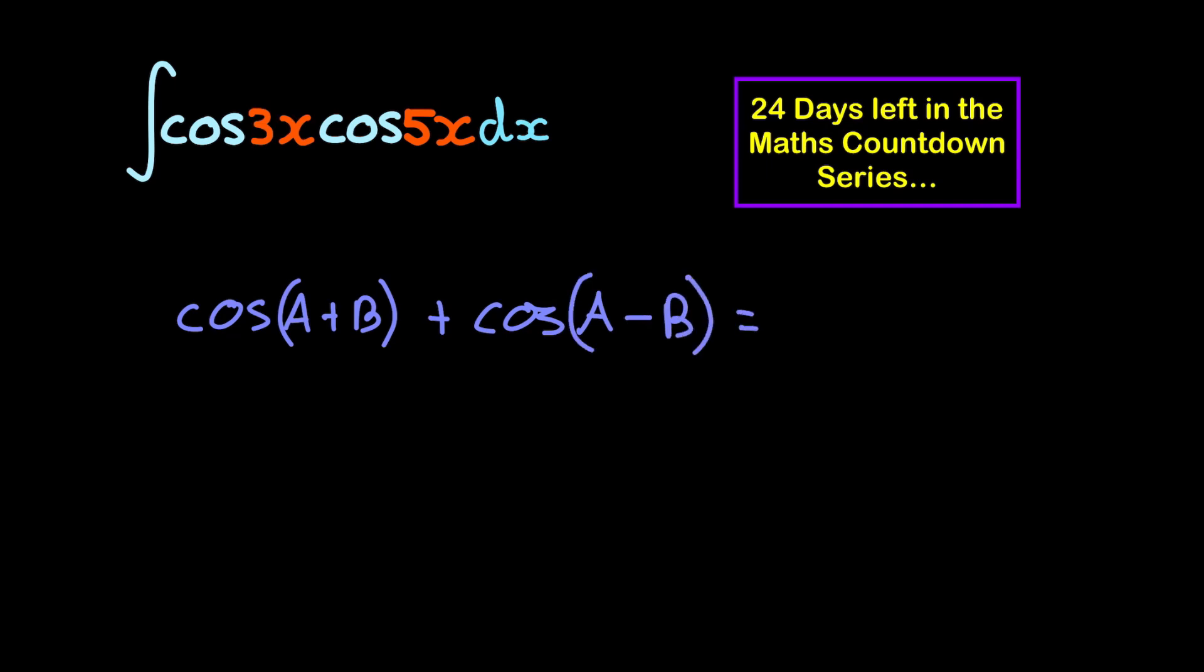So when I look at this, I'm immediately thinking, what identity is this most similar to? Well, if we do this: cosine of a plus b plus cosine of a minus b is equal to 2 cosine of a times by cosine of b. Then we notice that cosine of a times by cosine of b is very similar to this here.